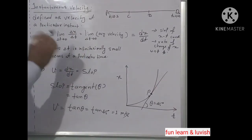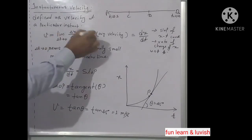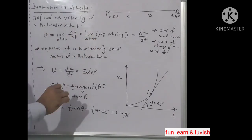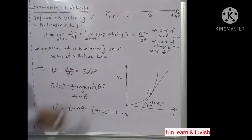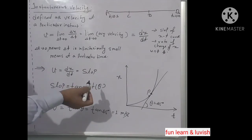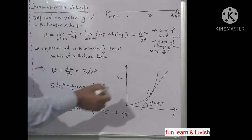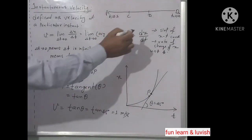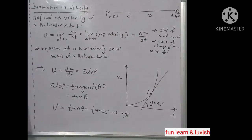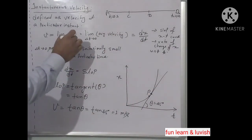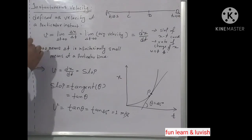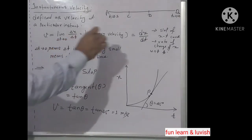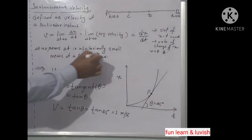As you will learn in calculus, instantaneous velocity is nothing but the derivative of x with respect to t. It is also called the slope of the x-t graph — the rate of change of x with respect to t. Delta t tending to 0 means delta t is infinitely small, meaning we are at a particular instant in time.